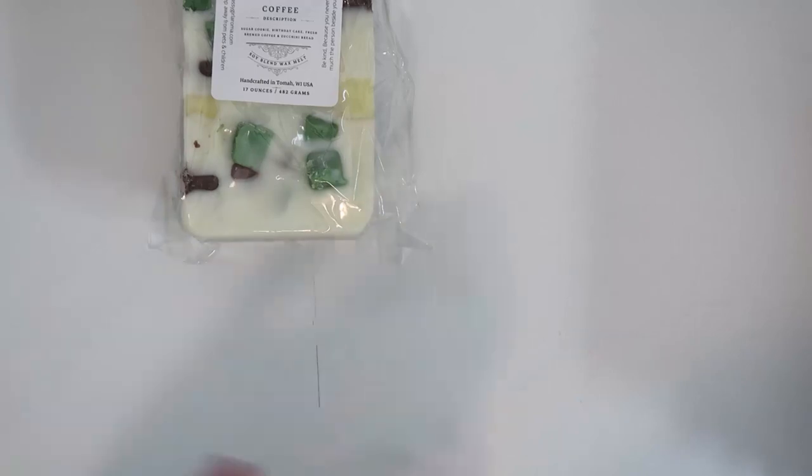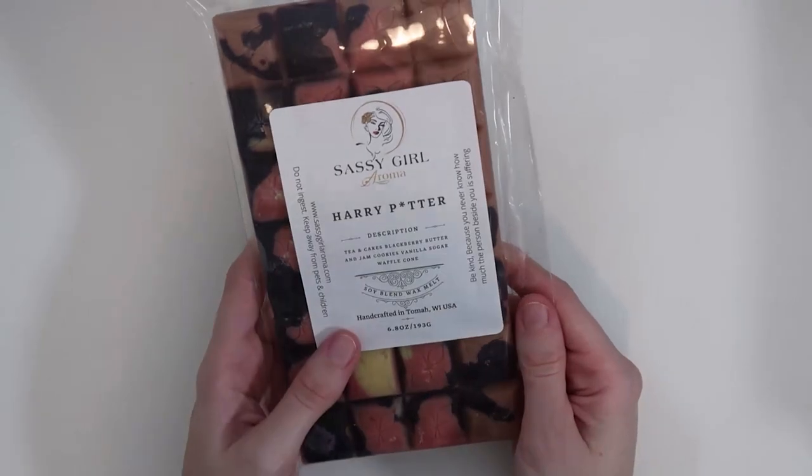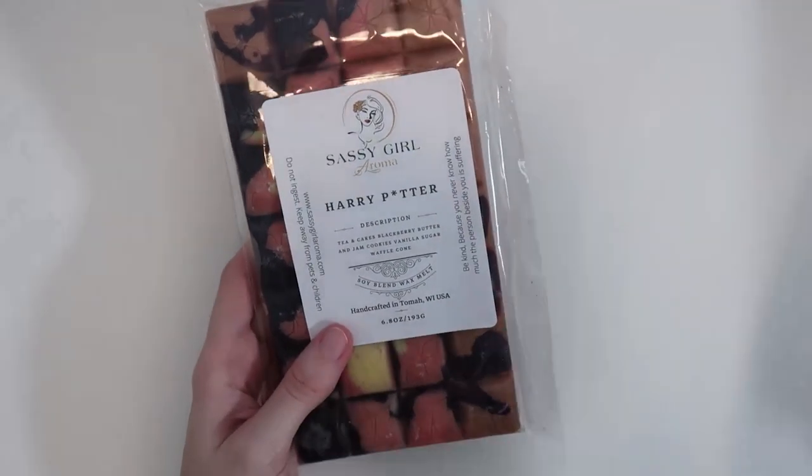I'm going to have to move these out of the way because the amount of brittles that I purchased is ridiculous. So here's my gorgeous brittle stack. So up first, we have Harry Potter. This is tea and cakes, blackberry butter and jam cookies, vanilla sugar waffle cone. She's super pretty. Once again, all I'm getting is blackberry jam butter cookies, but that tea and cakes mixed with that is so good. Now I'm getting the tea and cakes. You get hit right away with the blackberry jam butter cookies, but then tea and cakes definitely takes over. That's fantastic.